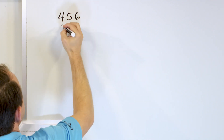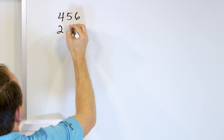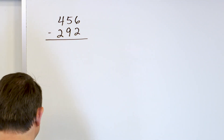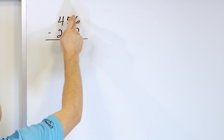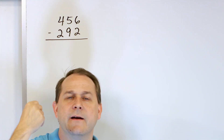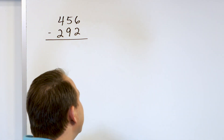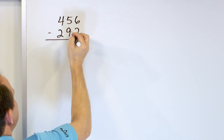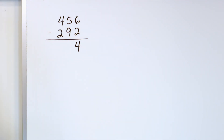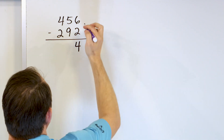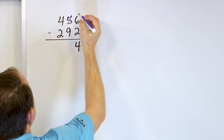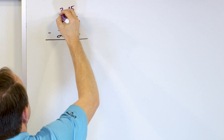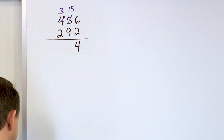456 is our next problem, minus 292. What is 6 minus 2? Start with 6, go down: 5, 4. We land on 4. What is 5 minus 9? Now 5 minus 9 is not going to work because 5 is not big enough. We have to make it a 15. In order to do that, we borrow from the 4 to make it a 3.